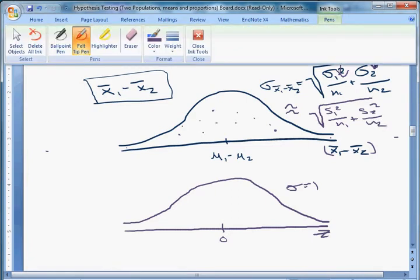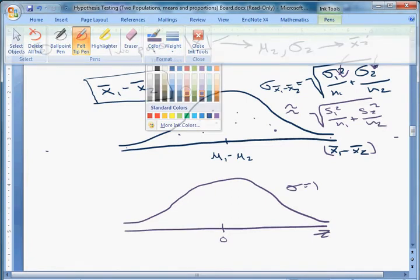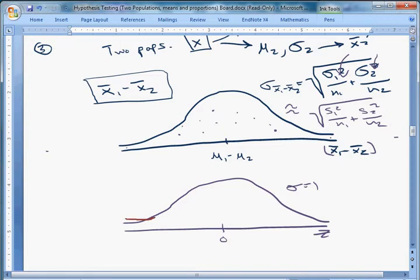That means instead of using the z-distribution, we're going to have to account for the fact that we're going to be a little bit off. We have a little bit more in the tails, a little bit less in the hump. It makes this a T distribution. It has a certain number of degrees of freedom.